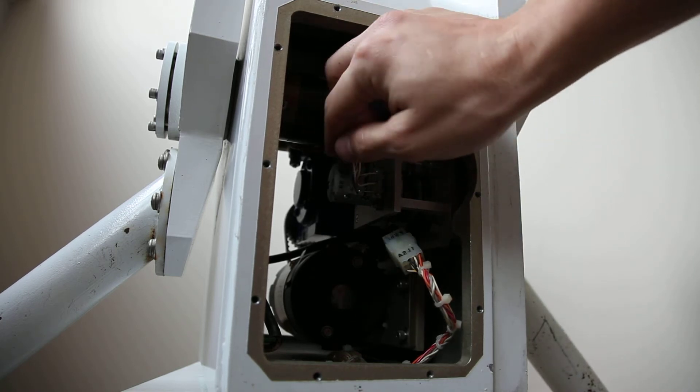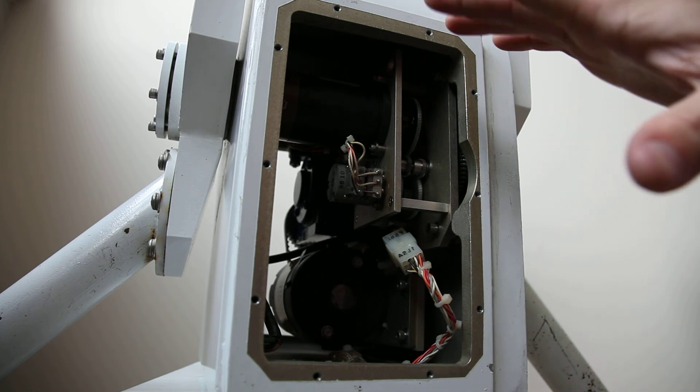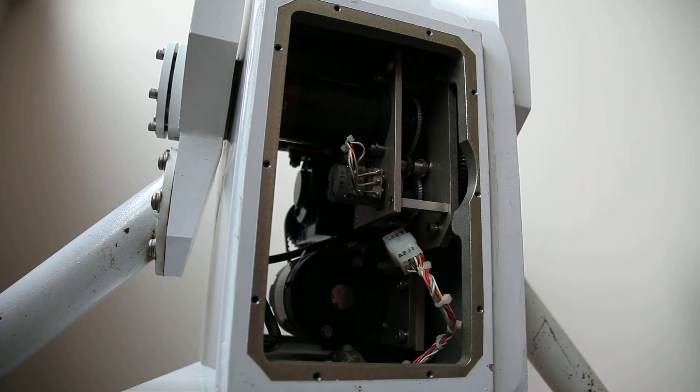Now what you see here is a limit switch. I thought at first this was a potentiometer, but in fact that is not the case. It's the limit switch to prevent the elevation control from going beyond its angular limits.